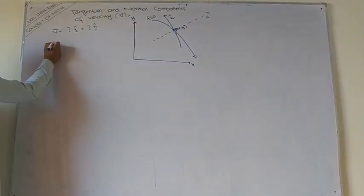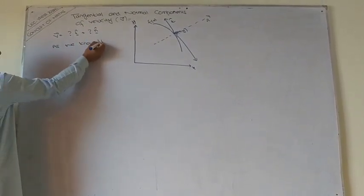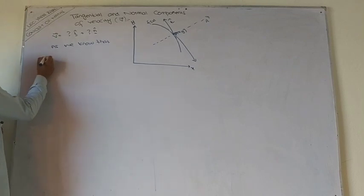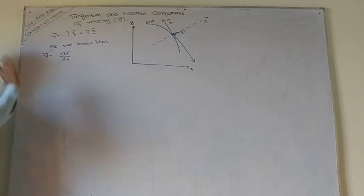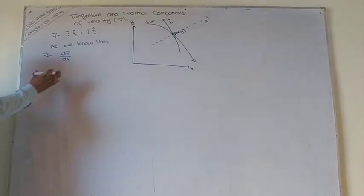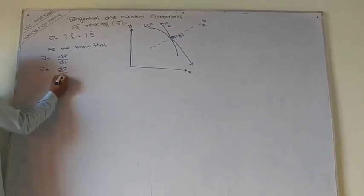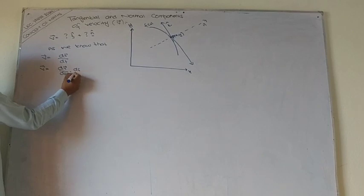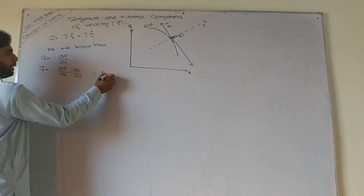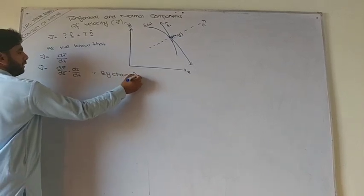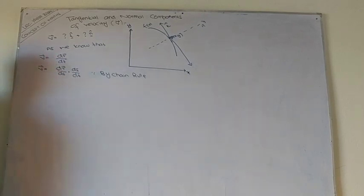So start here. As we know, V is equal to the derivative of displacement vector which we read in the previous topic. Now we can say that dr over ds, ds by dt, using chain rule. Why do we apply chain rule? This respective equation shows that r is a function of s and s is a function of t.